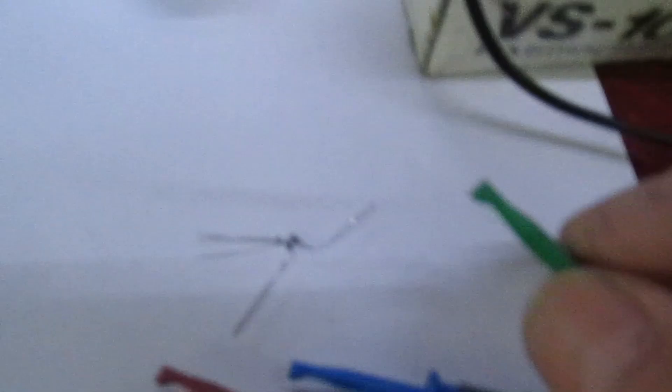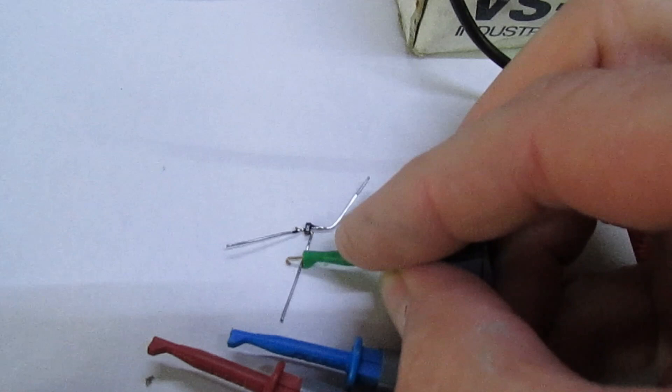Now the other way of testing is to solder three bits of wire on it and then we can clip it onto the peak tester. Well you get the idea, I'm holding the camera at the same time, but you get the idea - solder three bits of wire on then you can clip it on your peak.